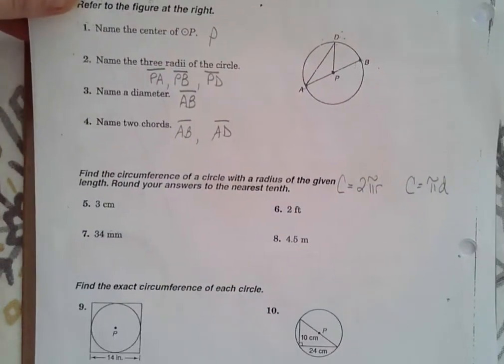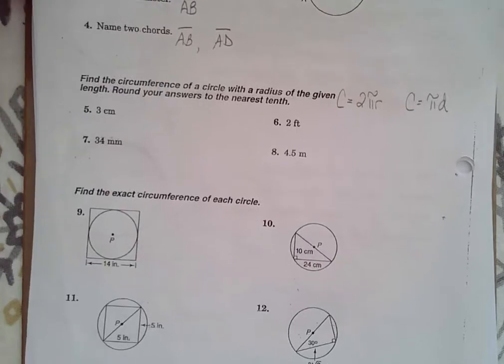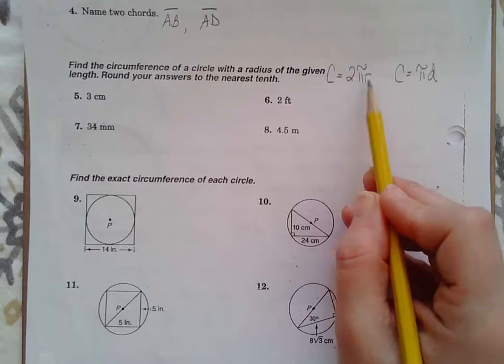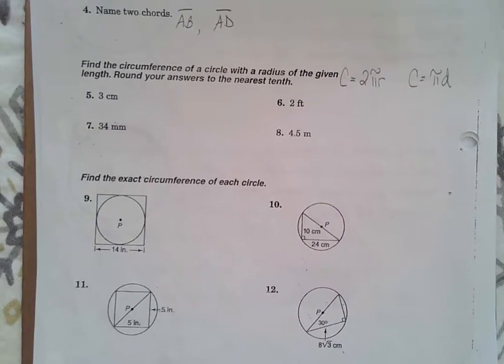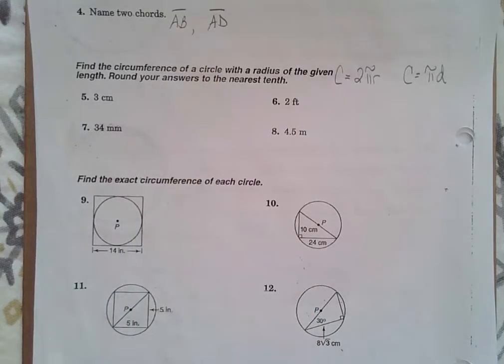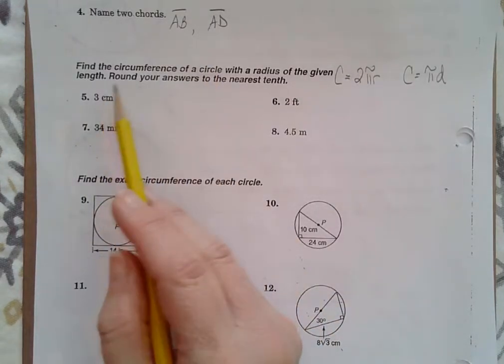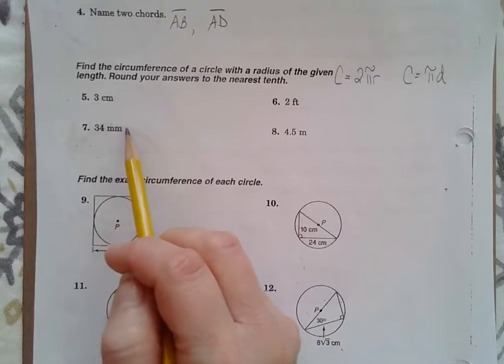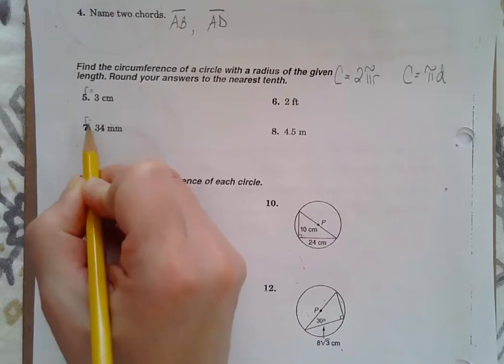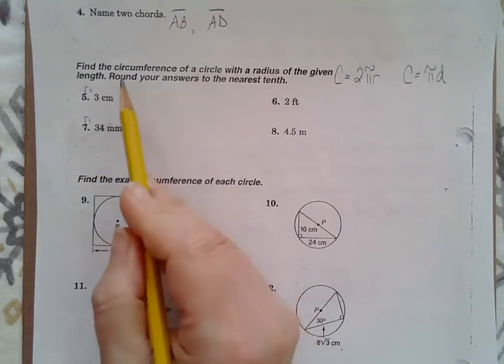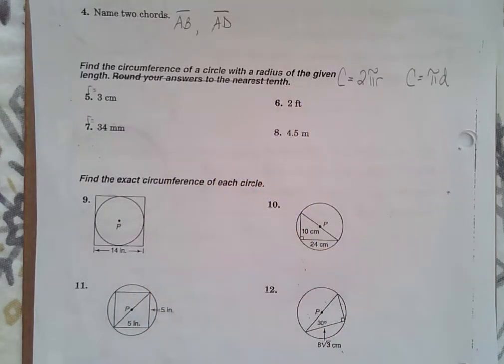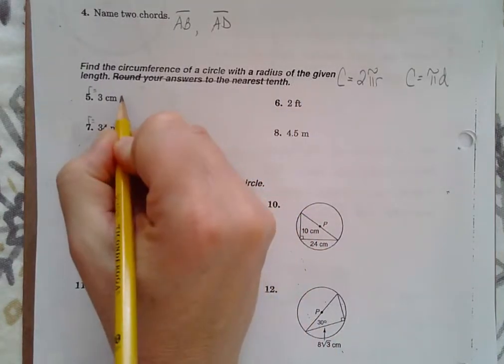Moving on to some circumference problems. Remember, our two formulas for circumference, it's essentially the same thing because 2 times R is your diameter. But we want to find the circumference of a circle with each of these radii that are given. So they don't draw the picture, but they tell you that this is the radius. So radius is equal to 3. Radius is equal to 34. The directions here say to round your answer to the nearest tenth. Me, I'm just going to keep my pi in the answer because I like it that way.